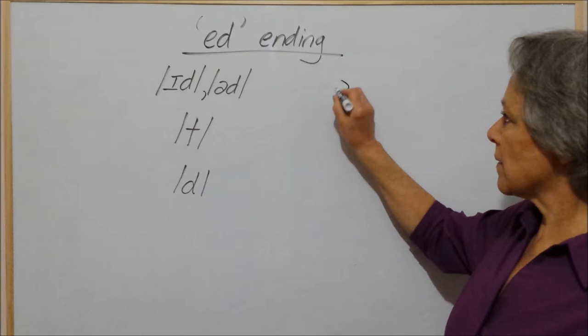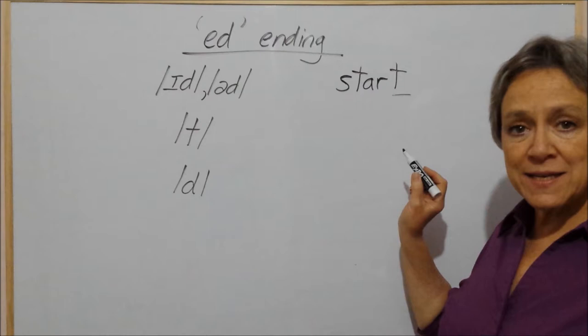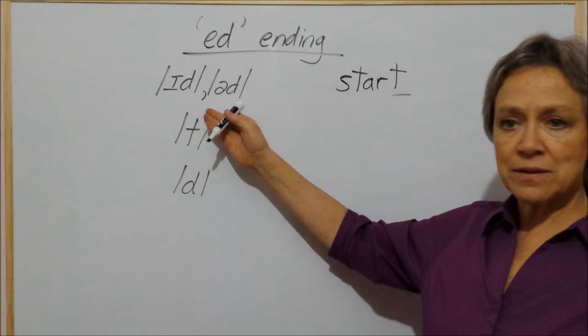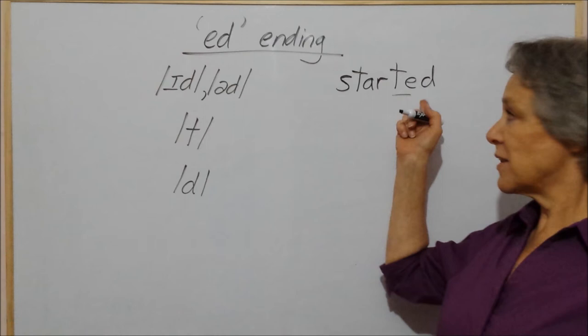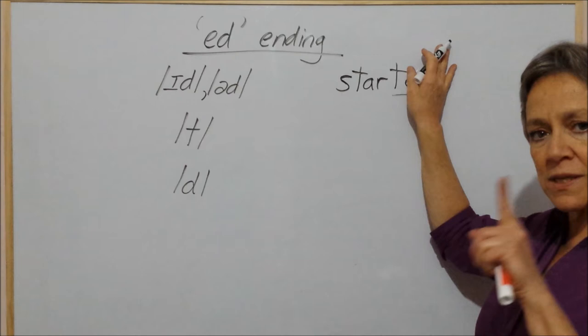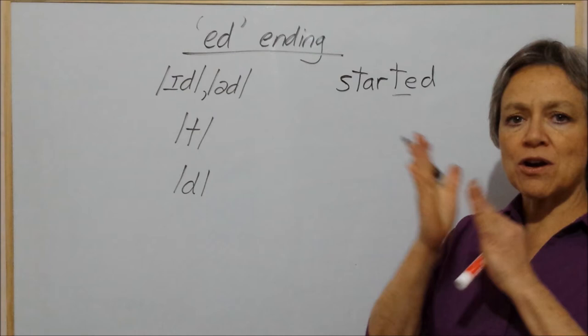For example, if I have the verb 'start', which ends in the sound /t/, when I add ed to it, that ed will sound like /ɪd/. Started, started. Notice that I get an extra syllable with the ed. When I had the word 'start', it was one syllable — start. But when I add ed, I got a second syllable — started.